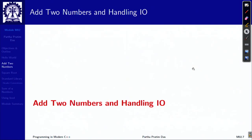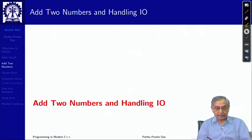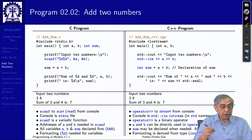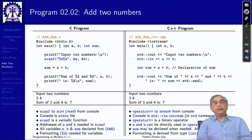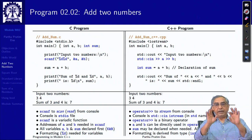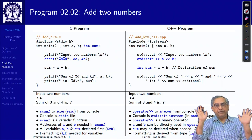Let us go to the next example, which is adding two numbers and handling the IO. We want to read two numbers from input, add them, and write their sum — a sample program which you must have written many times in C.